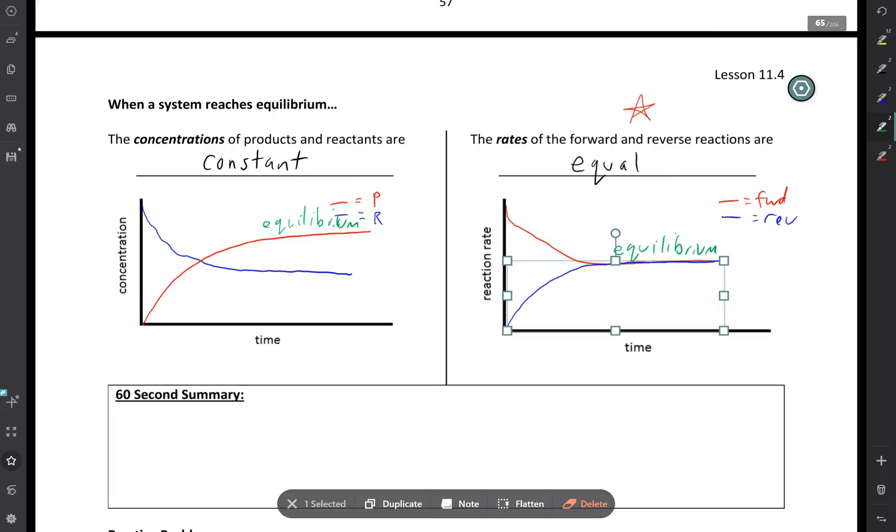So don't be confused with these two graphs. Make sure we know the difference, what happens with concentration and rates once equilibrium is established. All right, that's all I've got for today. I hope you found this helpful and thanks for tuning in.